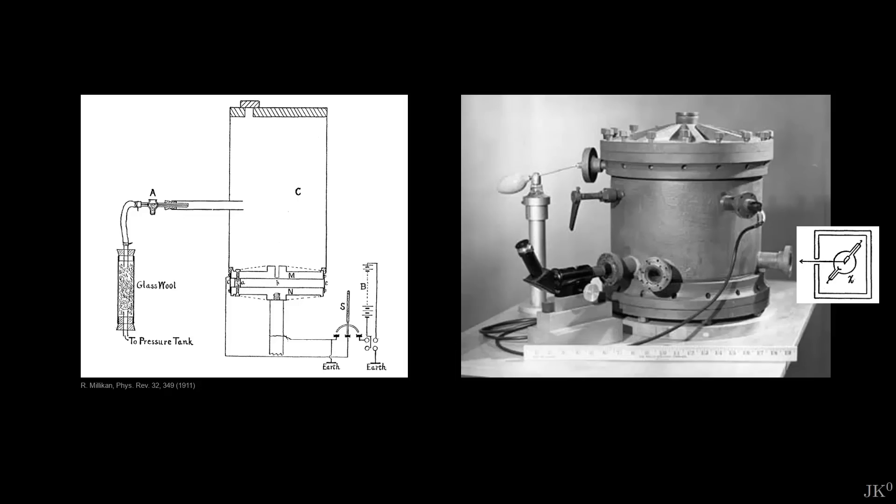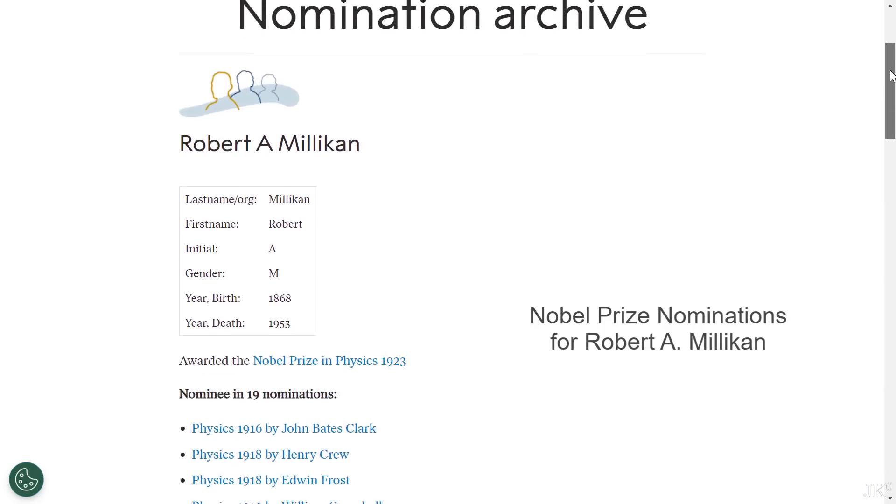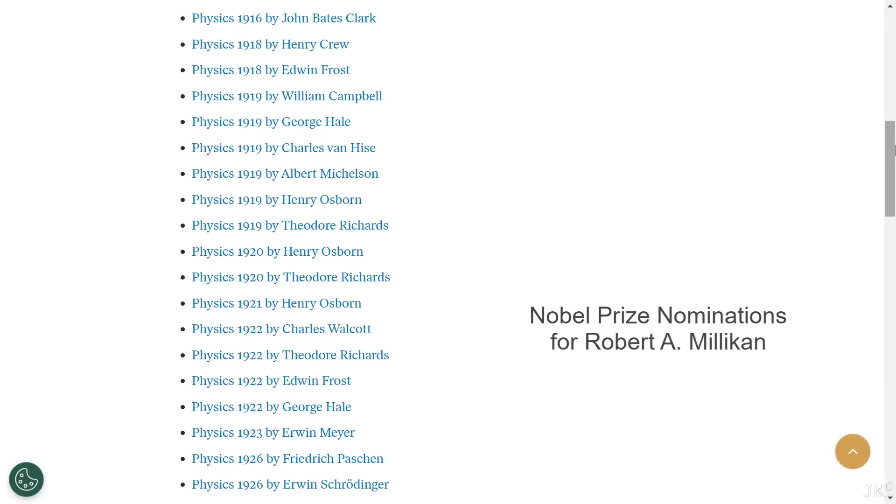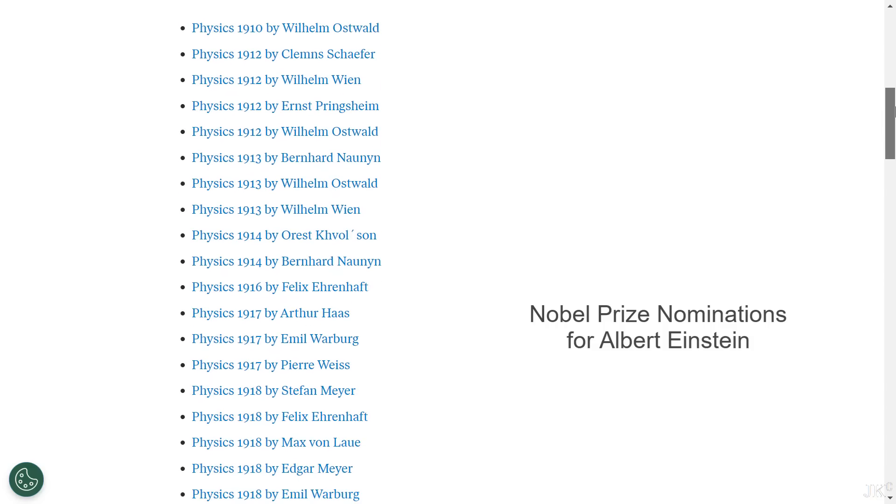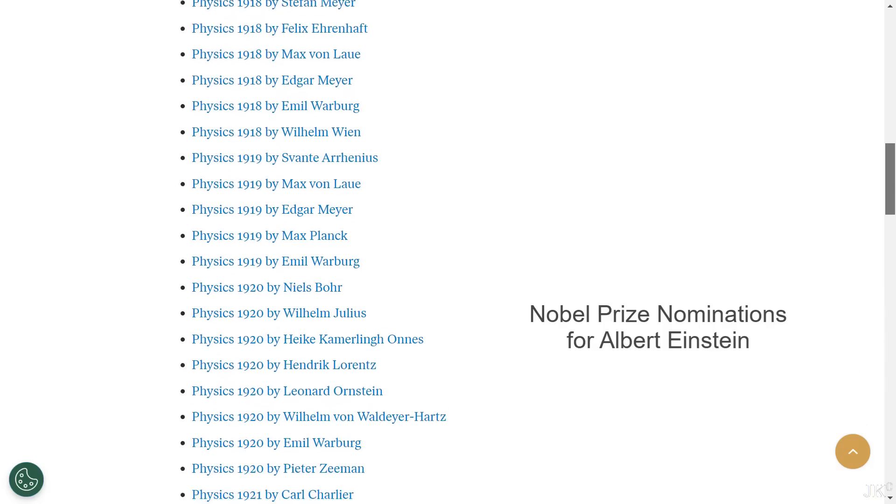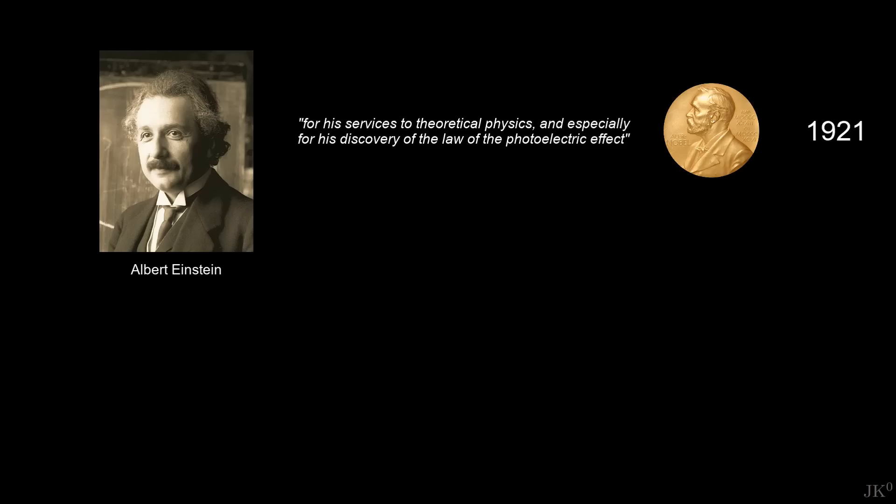If the oil drop experiment made Millikan a celebrity, his validation of Einstein's formula got him immediately and literally every year nominated to the Nobel Prize. Ironically, it was Millikan's experiment that finally led the Nobel Committee to pay attention to the 47 nominations for the prize that Einstein had received since 1910. Finally, in 1921, Einstein was awarded the Nobel Prize for his services to theoretical physics and especially for his discovery of the law of the photoelectric effect. No explicit mention of his quantum theories of light and matter or relativity.